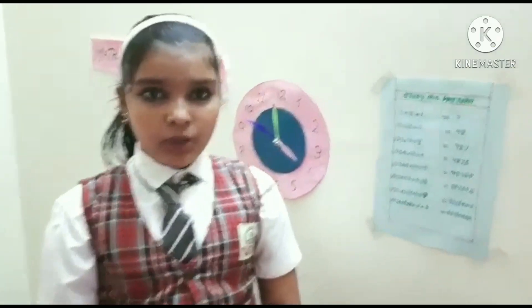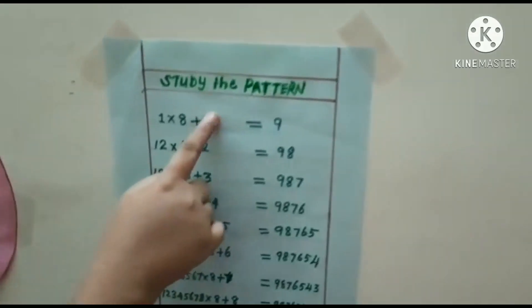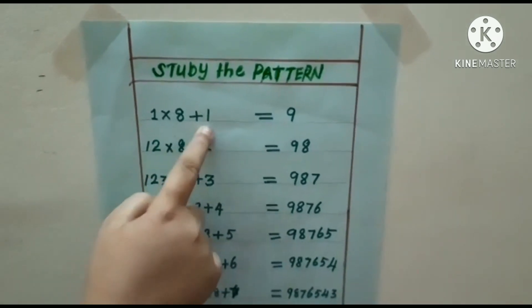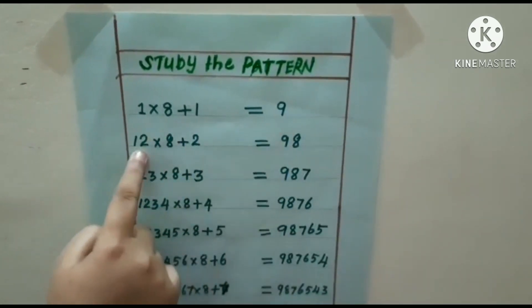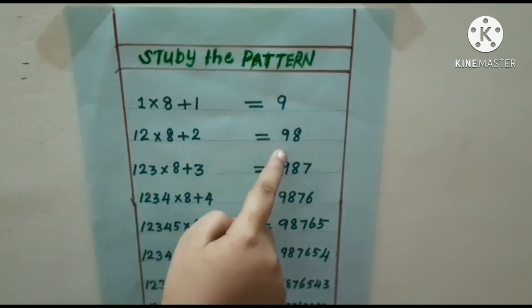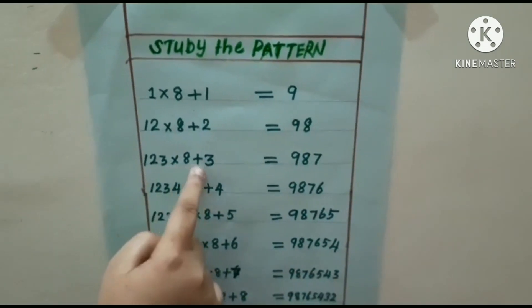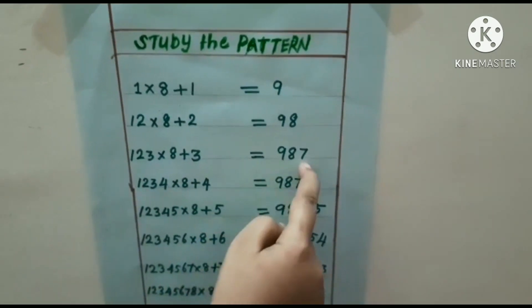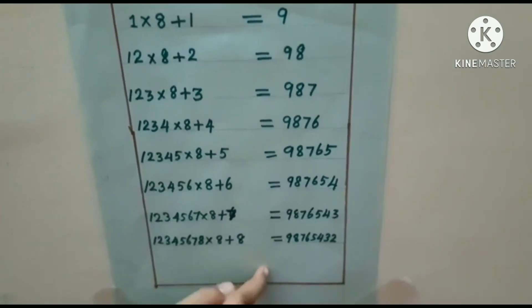I am showing you about patterns. Study the pattern: 1 × 8 + 1 = 9. 12 × 8 + 2 = 98. 123 × 8 + 3 = 987. So we can write like a continuation.